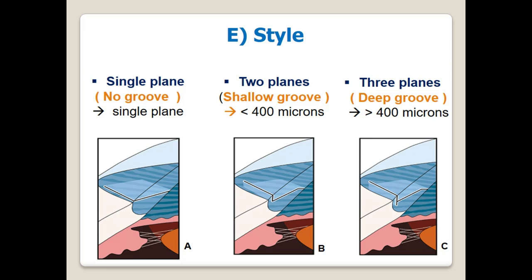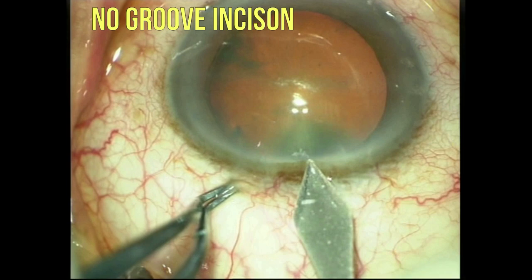The style or internal contour of the incision outlines the pathway of the keratome into the clear cornea, from its entry point on the corneal epithelium until the full keratome entry into the anterior chamber. This pathway is either a single-plane or step-like configuration — as in figure A — which is the least stable incision, or a multi-planar configuration, which is either two-step or three-step as in figures B and C respectively, and is the most commonly used incision.